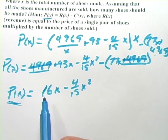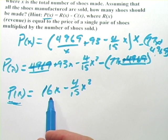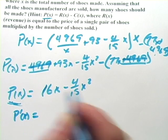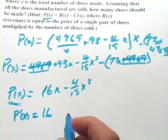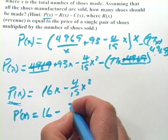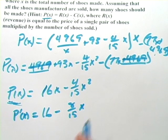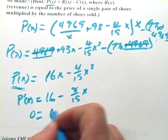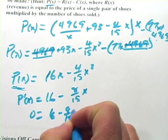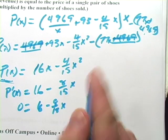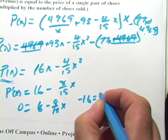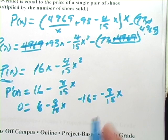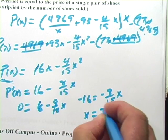So let's go ahead and take the derivative here. So P prime of x equals, well, that would just be 16. And this would be minus 8 fifteenths x. And then we'll set that equal to zero. And we'll do some math here. We get negative 16 equals negative 8 fifteenths x. And I think if you crunch that out, you're going to get x equals 30.